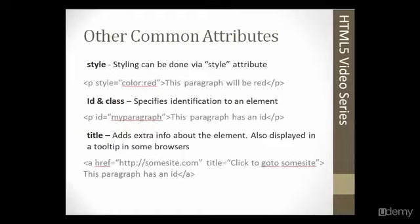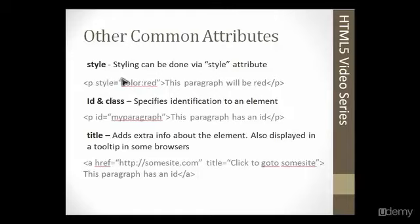We have some other common attributes. The style attribute is a big one — it will allow us to design the layout and look of certain elements on the page. Here we have an example with a P tag, a paragraph tag, wrapped around the text 'This paragraph will be red.' We have the style attribute as the name, and the value is color red. This is a style selector — there are many different kinds, such as background color, width, and height. We'll get into that in a later section.